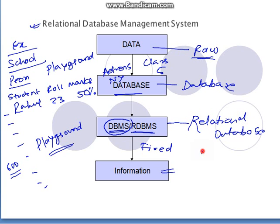Relational database means relating one data with another. For example, if you are associating the roll number with the name of the student, that is the relation we are creating. By creating relations, it is very easy to sort the data and work on it to find out useful information from it.